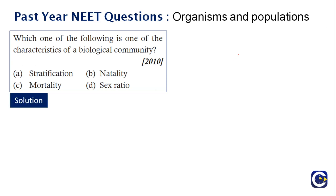You are given four options: stratification, mortality, natality, and sex ratio. If you look here clearly, natality, sex ratio, and mortality all contribute to population aspects. The answer is stratification — stratification is one of the characteristics of a biological community, while natality, mortality, and sex ratio are basic characteristics of population.